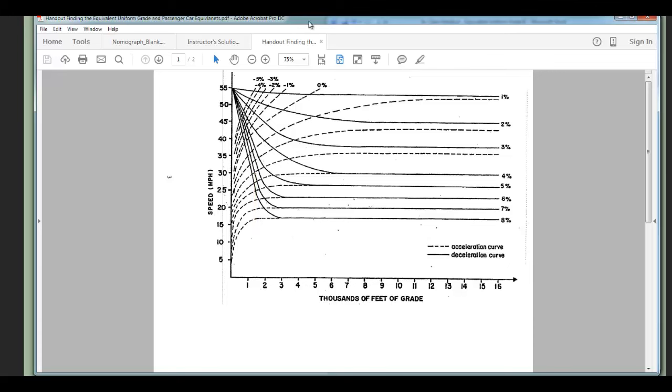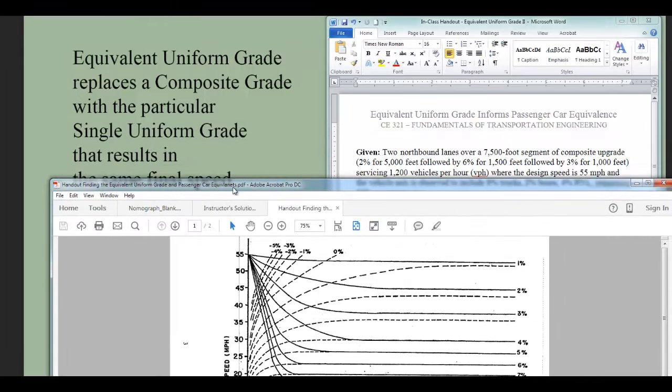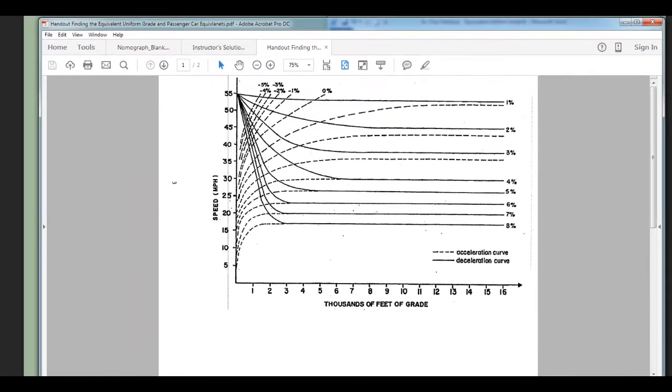I need to ask myself, what is that single uniform grade over an extended length of 7,500 feet that results in that same final speed of 31 miles per hour? At 7,500 feet, I come up to about 31 miles an hour, and I am finding that the equivalent uniform grade, the singular grade that would give me an end speed of 31 miles an hour, is just over 4%.